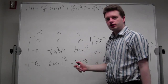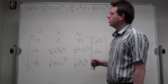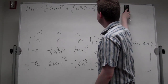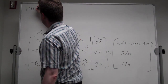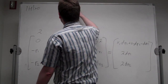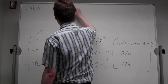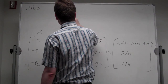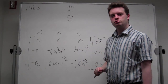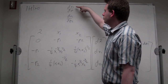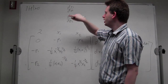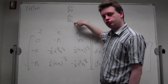To find the comparative static results, we will calculate dx1/dm and dx1/dp2. Since this is a simple utility maximization problem with a budget constraint, we want to know how the consumption of good one changes if income changes, and how the consumption of good one changes if the price of good two changes.